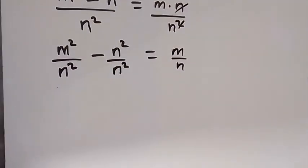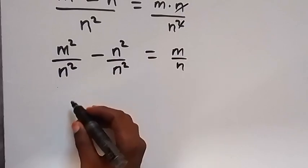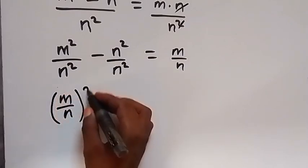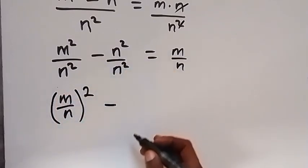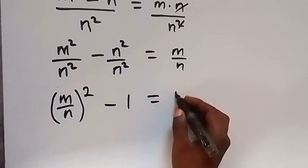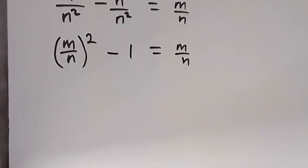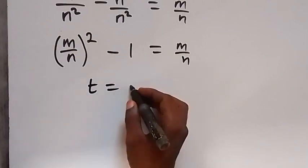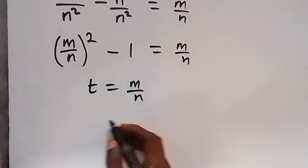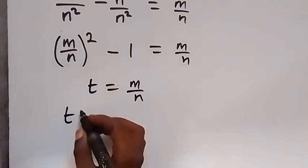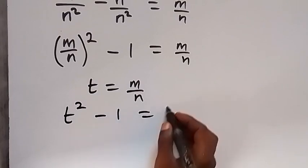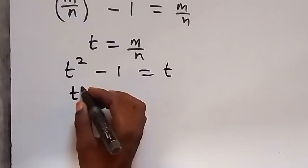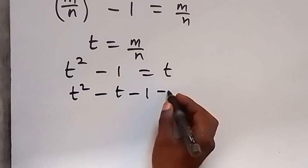When we rewrite this from the law of indices, we have same power, so we can bring it out and say this is m over n to the power of 2, that's squared, minus 1, which equals m over n. We have m over n in common, so let t equal m over n. This equation becomes t squared minus 1 equals t. Taking t to this side, we have t squared minus t minus 1 equals 0.